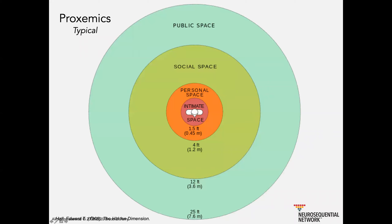This combination of a sensitized stress response and a different sense of personal space and proxemics makes lots of problems. This is a diagram from a classic book about intimate space and personal space — Edward Hall's work — showing that if somebody's further than 12 feet away, between 12 and 25 feet, that's considered public space.